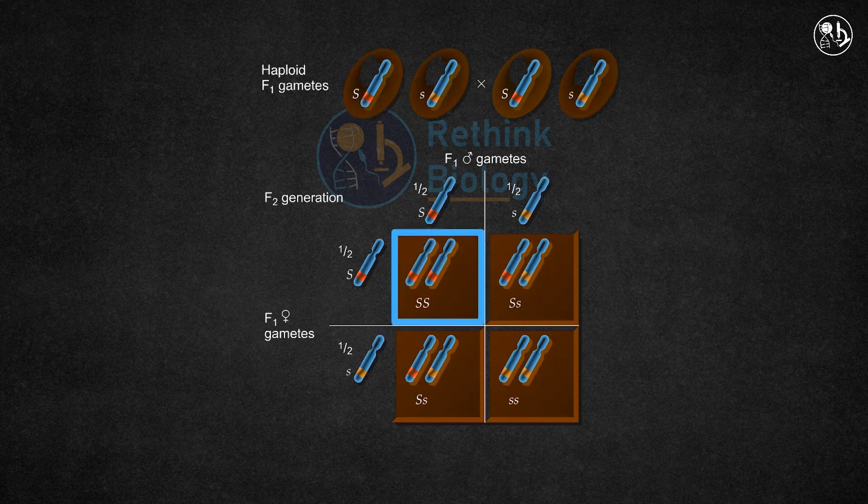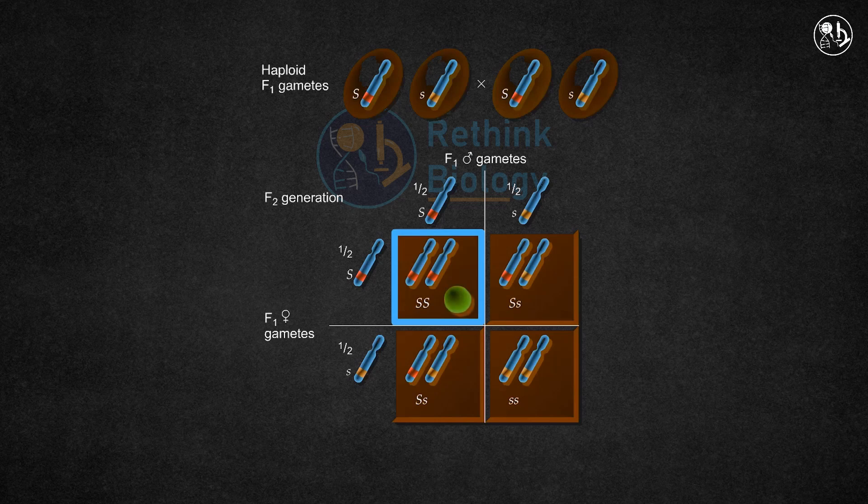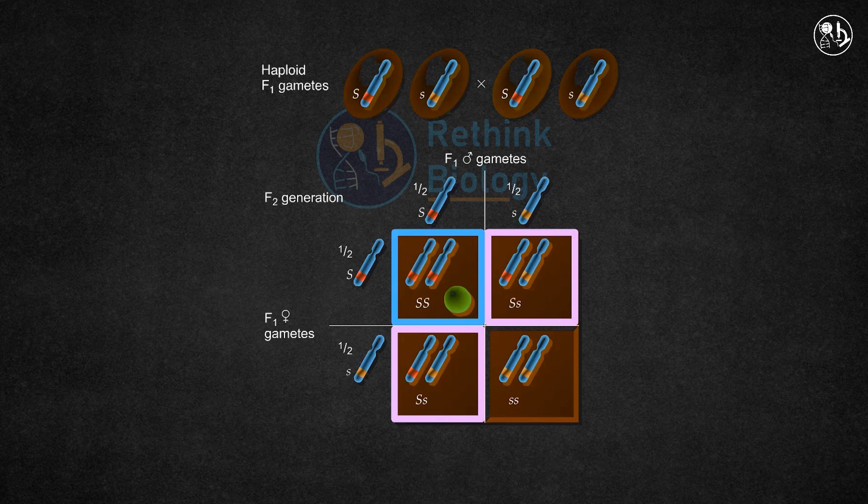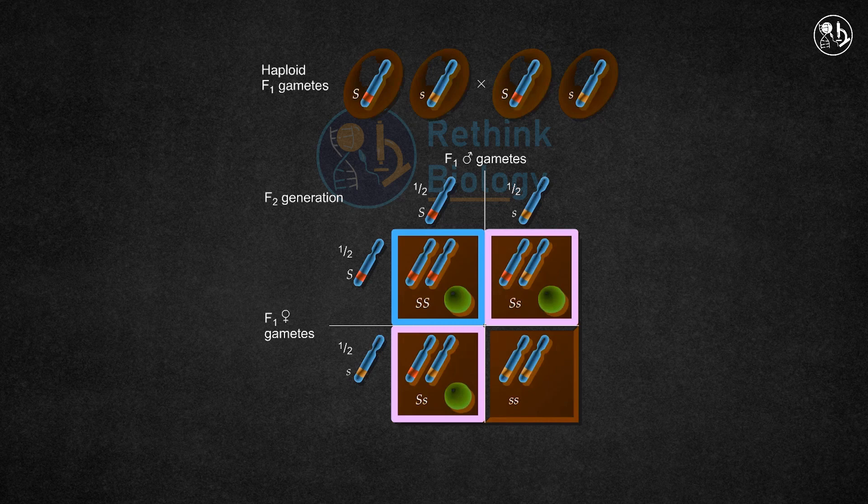In the F2 generation, three possibilities can result from the gametes joining: one capital S capital S, two capital S small s, and one small s small s, which determines the resulting traits of the offspring.